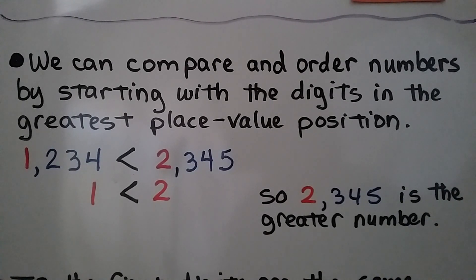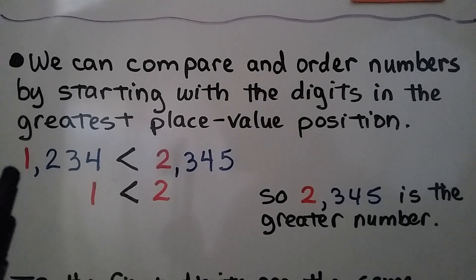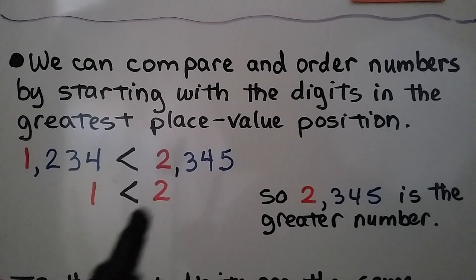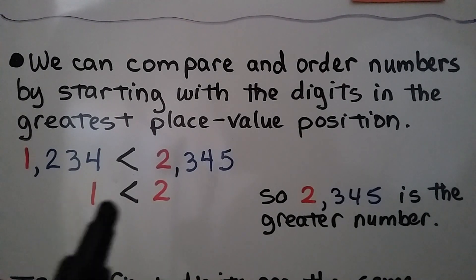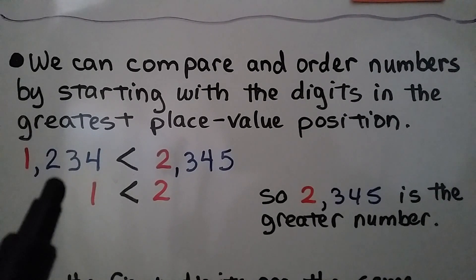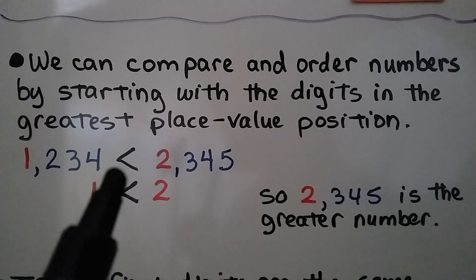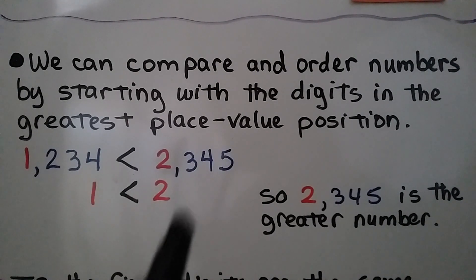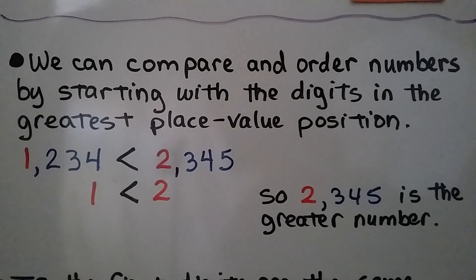We have two numbers here. This one starts with a one, this one starts with a two. And because one is less than two, 1,234 is less than 2,345. So we know 2,345 is the greater number.